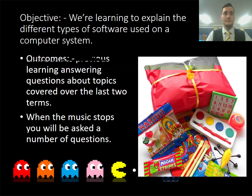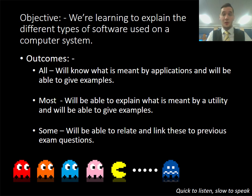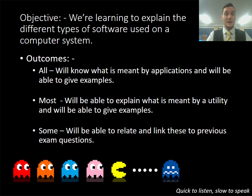Our main objective for today's lesson was to explain the different types of software available on a computer system — what an application is and what a utility is. Looking at our outcomes, all of you managed to figure out what an application was and were able to give examples, along with explaining what a utility is and giving examples of that.